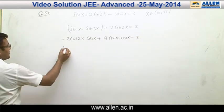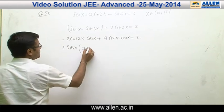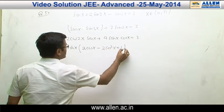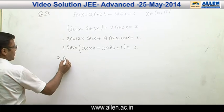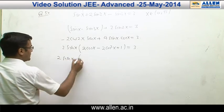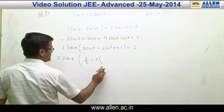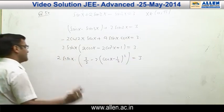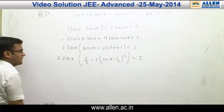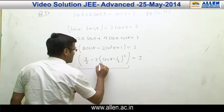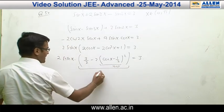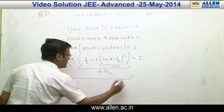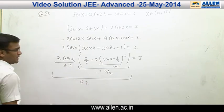We factor out 2 sin x from the LHS: 2 sin x · (2cos x − cos 2x) = 3. Writing cos 2x = 2cos²x − 1 and converting to a perfect square form, the LHS becomes 2 sin x · (3/2 − 2(cos x − 1/2)²). Since the squared term is ≥ 0, this expression on the LHS cannot exceed 3. But the RHS is exactly 3.